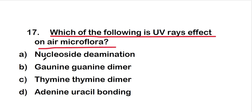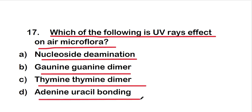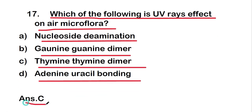Next question: which of the following is the UV rays effect on air microflora? The options are nucleoside deamination, guanine-guanine dimer, thymine-thymine dimer, or adenine-uracil bonding. The right answer is option C, thymine-thymine dimer. Thymine-thymine dimer is the effect of UV rays on air microflora.